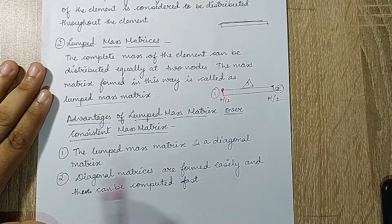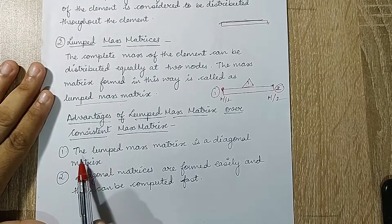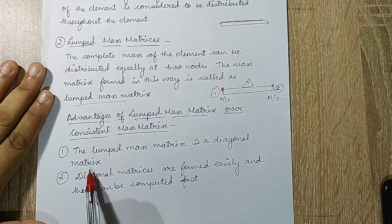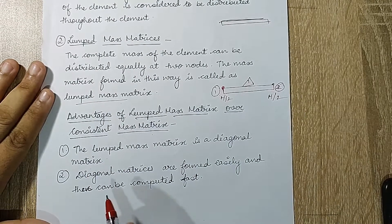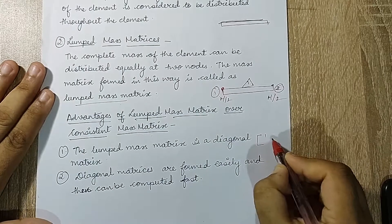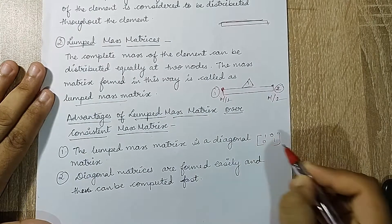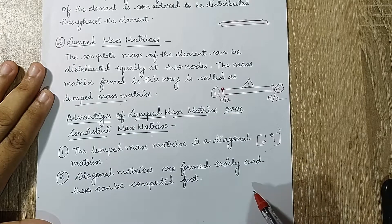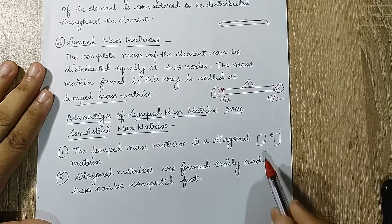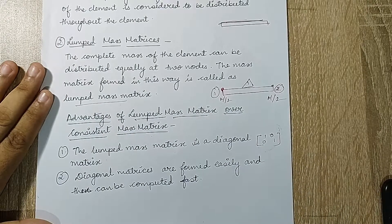There are certain advantages to choosing lumped mass matrix. It is a diagonal matrix. When I say it's a diagonal matrix, I mean that my diagonal elements will be one and rest of the elements will be zero. This will make it easier or simpler to solve.